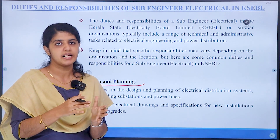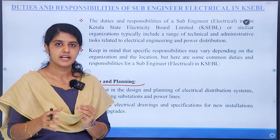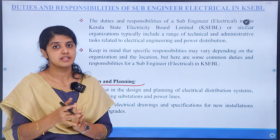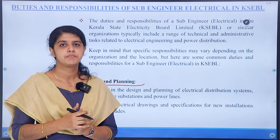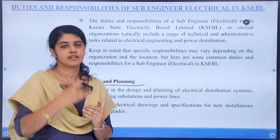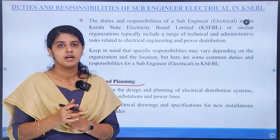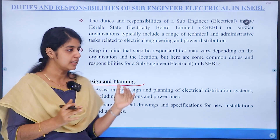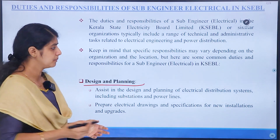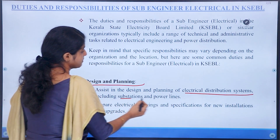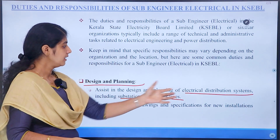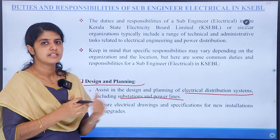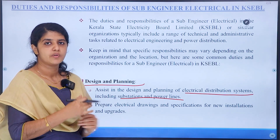There is a post on the technical side of the electrical power system. There is a power line interruption — that is a technical item, and there is also the administrative side. There is a whole installation, a post for junior staff, and a post for the power overseer lineman. The first duty is design and planning of electrical distribution systems, including substations and power lines. There is a new installation design, planning, and construction of electrical infrastructure.